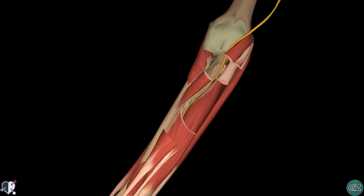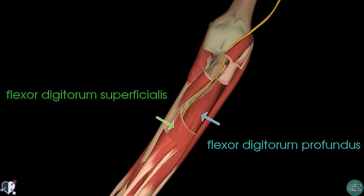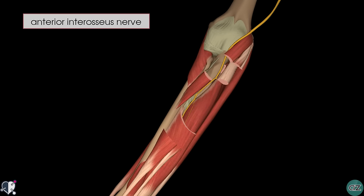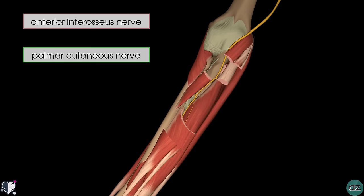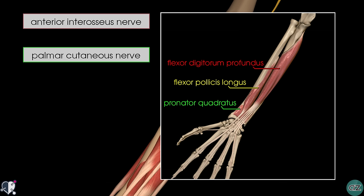Within the forearm, the median nerve travels between the flexor digitorum profundus muscle and the flexor digitorum superficialis muscle. There are two major branches which come off the median nerve in the forearm: proximally you've got the anterior interosseous nerve and distally you've got the palmar cutaneous nerve. The anterior interosseous nerve supplies the deep flexor muscles of the anterior compartment, including the flexor pollicis longus, the pronator quadratus and the lateral half of the flexor digitorum profundus muscle.